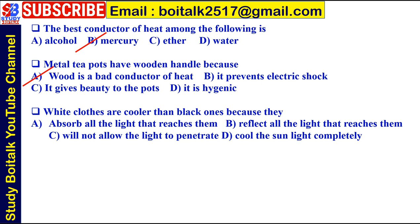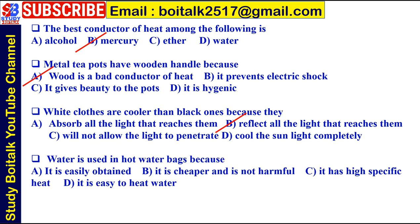Next: White clothes are cooler than black ones because they — A) absorb all the light that reaches them, B) reflect all the light that reaches them, C) will not allow light to penetrate, or D) cool the sunlight completely. The answer is B) reflect all the light that reaches them. Next: Water is used in hot water bags because — A) it is easily obtained, B) it is cheaper and not harmful, C) it has high specific heat, or D) it is easy to heat. The answer is C) it has high specific heat.